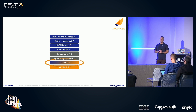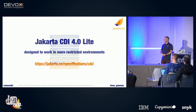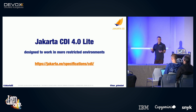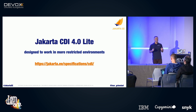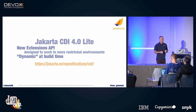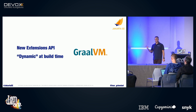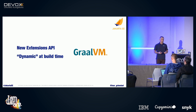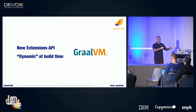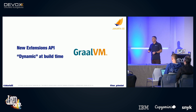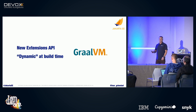CDI Lite 4.0 is a new specification — it's a subset of CDI 4.0, designed so that CDI can work in more restricted environments. The goal is to remove the dynamics of CDI from the lite version, keeping that in the CDI full profile, and create a new extensions API. You can still have portable extensions, but not in the old way where extensions were read at runtime — instead, the compiler can figure it out at compile time, so you can do dynamic stuff at build time and produce native images using technologies like GraalVM.